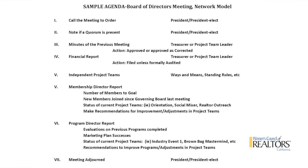Number six would be the membership director report. We would ask the membership director to report on: number of members to goal — if your goal is 80 and you're at 75, great, but you need to know where you are at any given time; names of members who have joined since the last governing board meeting; status of project teams reporting directly to the membership director; and recommendations on whether you need to expand project teams and how they're performing.